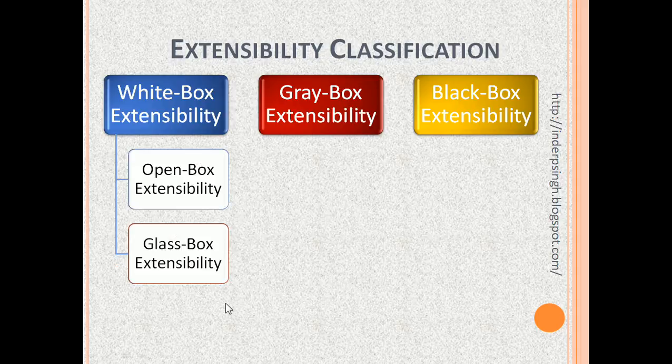Software can be extended in various ways. Here is one extensibility classification. First is white box extensibility. This allows the software system to be extended by changes or additions to the program source code.